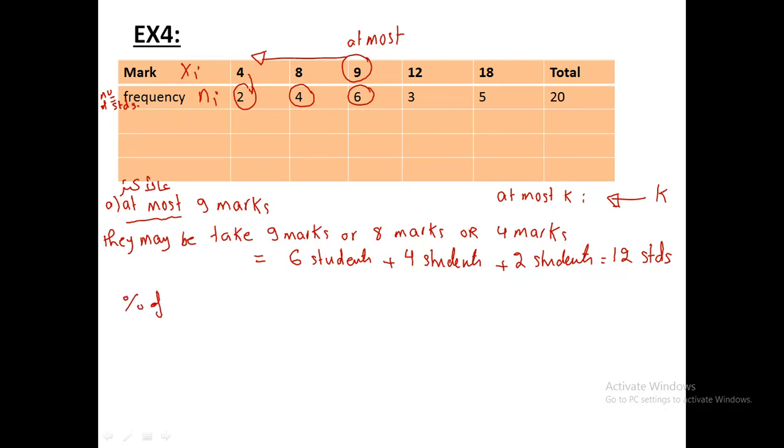Their percentage. The percentage of these students, as we have said, the percentage is part over all times 100. The datum is 12 over the number of all students is 20 times 100. So their percentage is 60%.